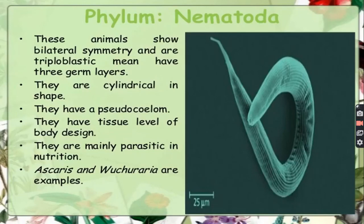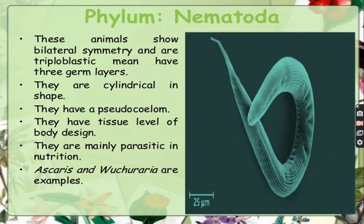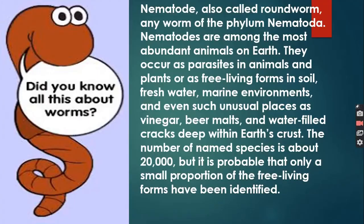Let's have a quick review. These animals show bilateral symmetry and are triploblastic — they have three germ layers: ectoderm, endoderm, and mesoderm. They are cylindrical in shape. They have a pseudocoelom, which is a false coelom. They have a tissue level of body organization in which body parts are divided. They are mainly parasitic in nutrition. Common examples are Ascaris and Wuchereria.